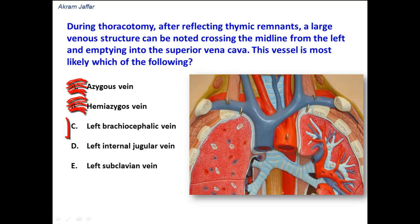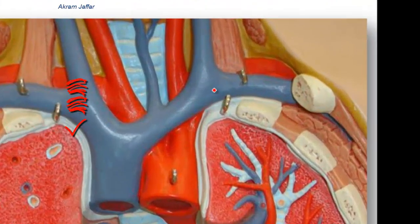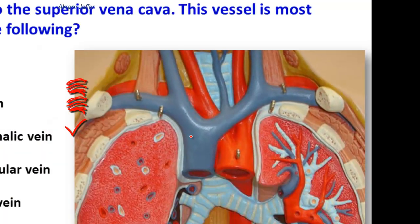Left brachiocephalic vein — this is the correct option. It is formed by the union of the left internal jugular and left subclavian vein behind the left sternoclavicular joint, and then crosses from left to right to join the right brachiocephalic vein behind the first right costal cartilage and form the superior vena cava.